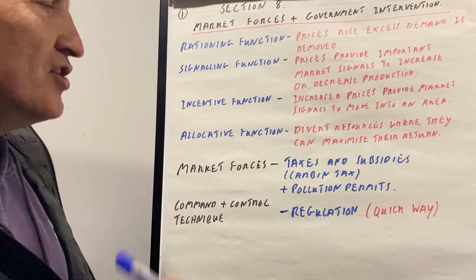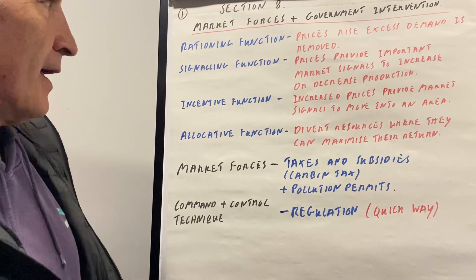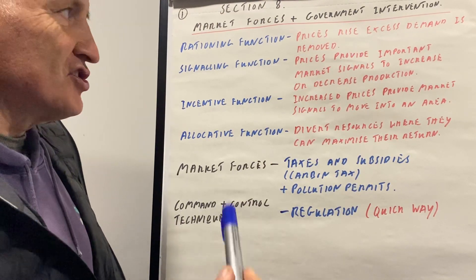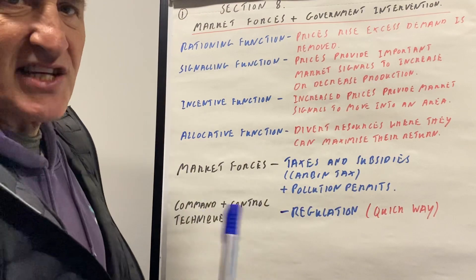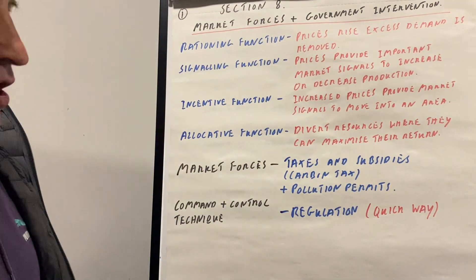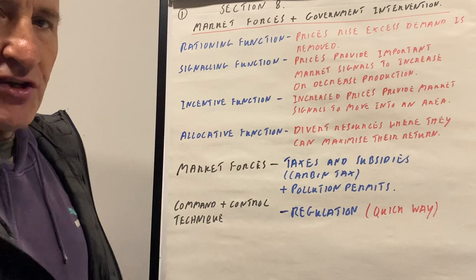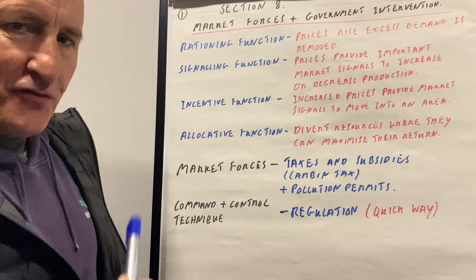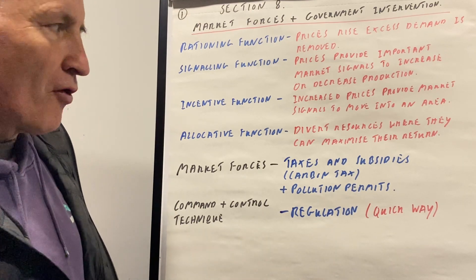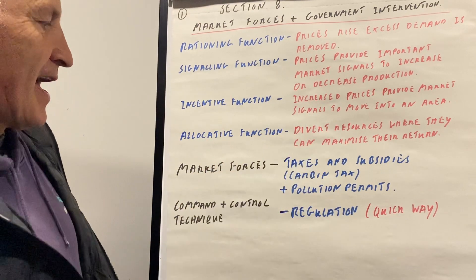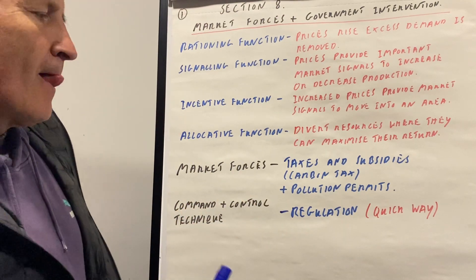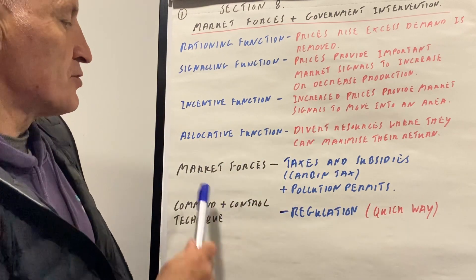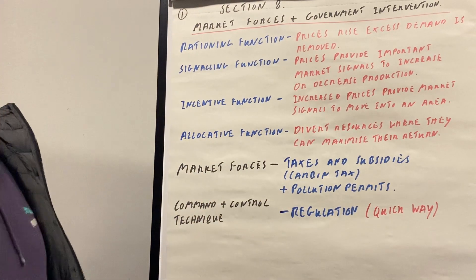Whenever you talk about the price mechanism, you need to talk about all these different functions. If prices rise because there's a shortage of the product, e.g. sand, then people will use less of it. The signalling function is that prices provide important market signals to producers to produce more of that particular type of good. The incentive function: if prices go up, firms are going to make more profits, and then they'll move into that area. The allocative function is putting your resources into areas where they're going to have the most impact, where price is equal to marginal cost.